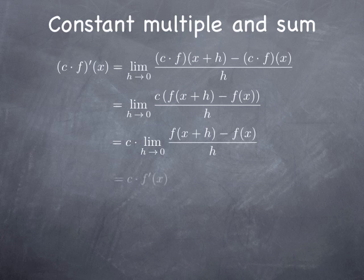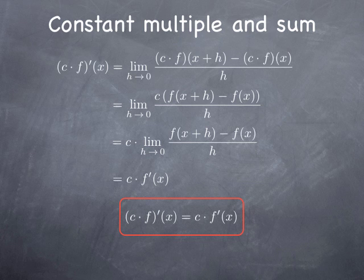In other words, we obtain the constant multiplied by f prime of x. So this is one more rule that we have now available to simplify our calculations of limits.